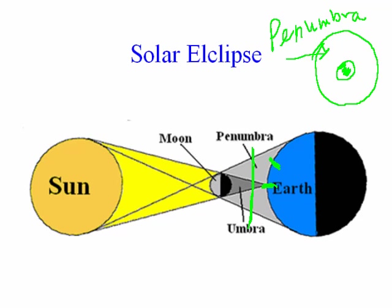If you're only in the penumbra, you only see a partial eclipse. The umbra gives you the total solar eclipse, and the penumbra gives you the partial eclipse. If you're standing in the penumbra when the shadow comes across, you're only going to see a partial eclipse. If you are standing in the umbra, you're going to see a total eclipse. A person can be standing in the umbra for a maximum of seven minutes.